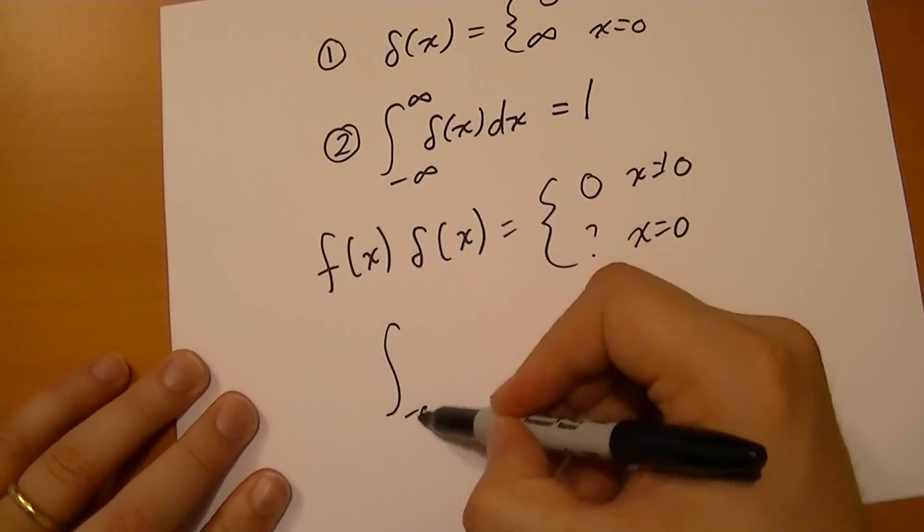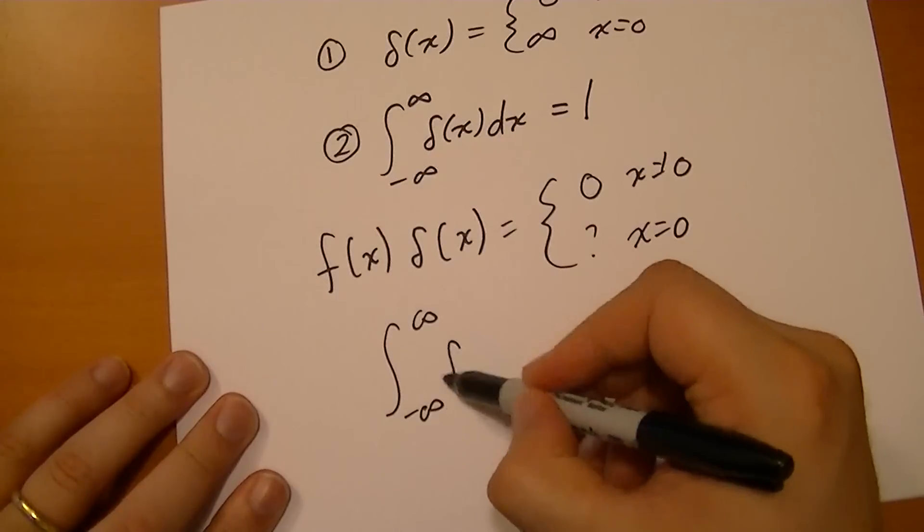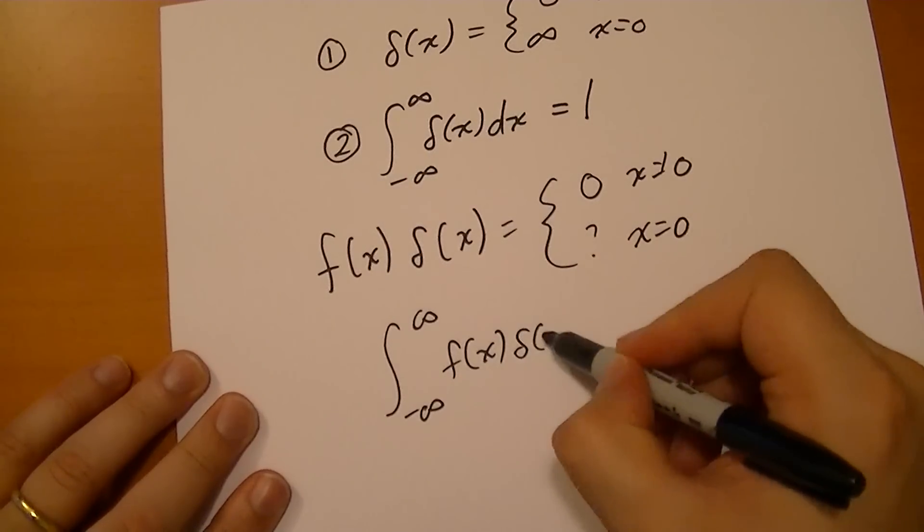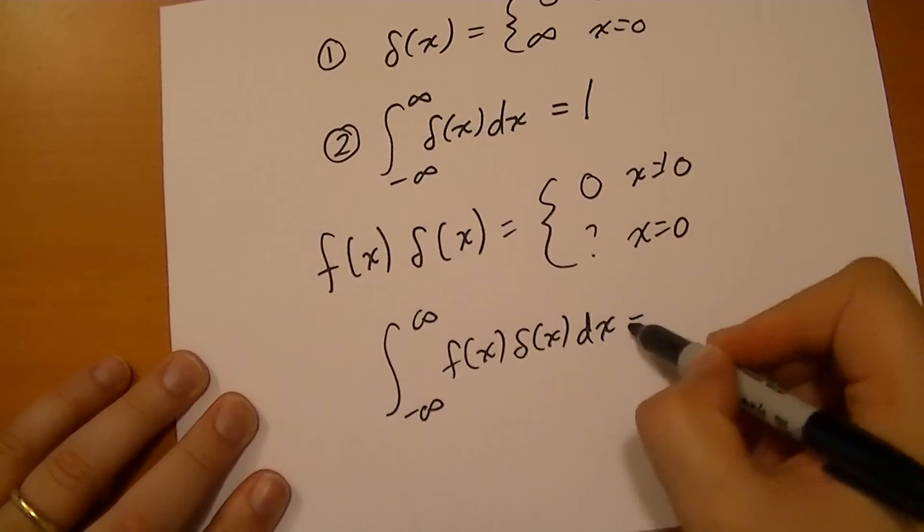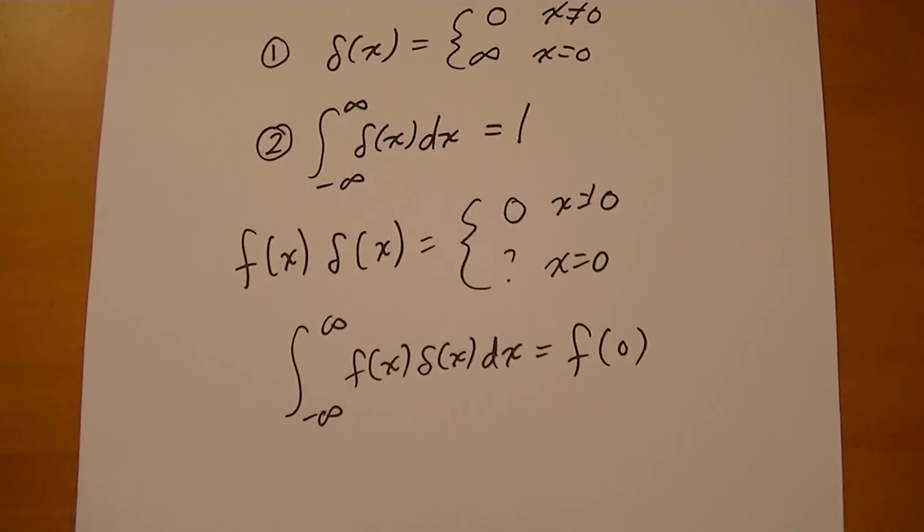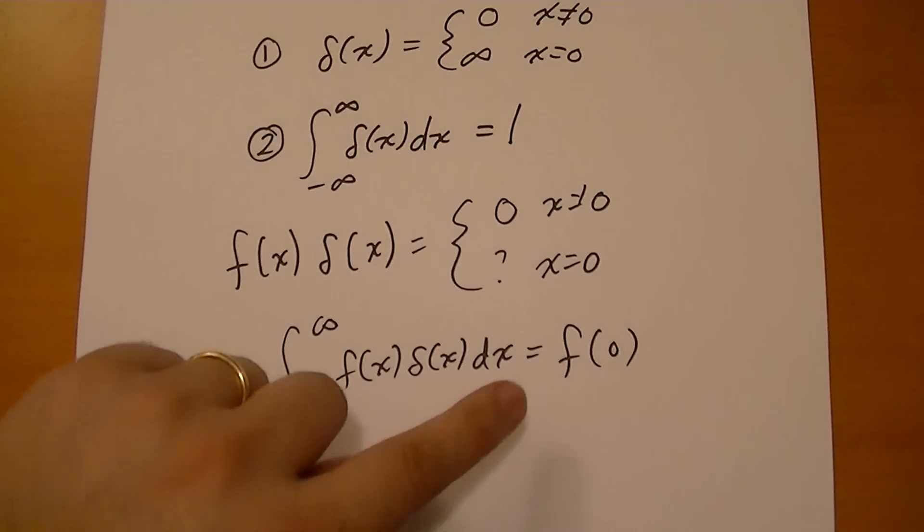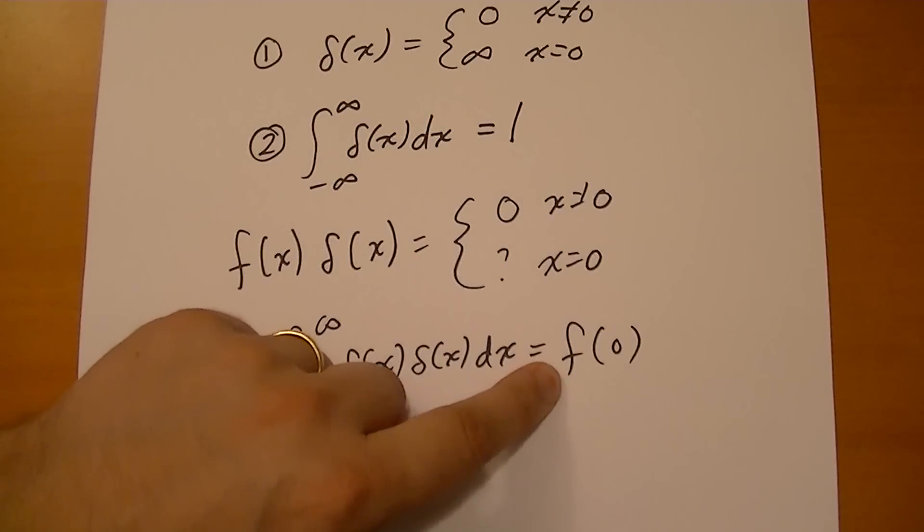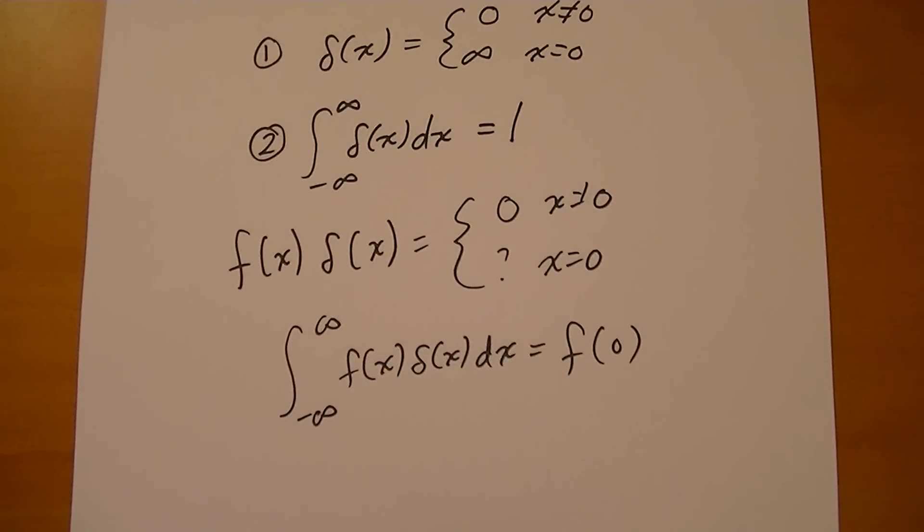But the integral of this is going to equal f of zero. It kind of sort of picks out that value. It allows that function to move outside of the integral bars there. And the reason why it works is because only the value at f is used. Any other value of f is completely ignored because the Dirac delta function is zero everywhere else.